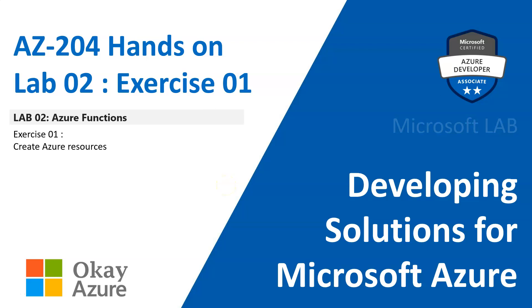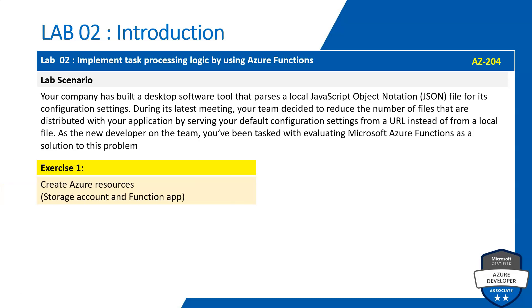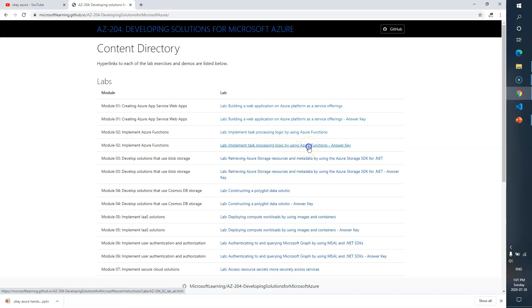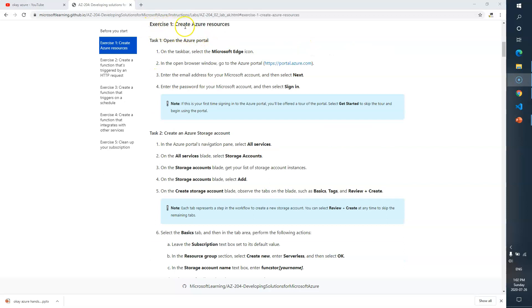Hey guys, welcome back. Let's start Lab 2, Exercise 1. This is the lab scenario — we need to create Azure resources. We will be creating a storage account and a function app. Today we are on Module 2 Lab: implement task processing logic by using Azure Functions. Now let's start Exercise 1: create Azure resources.